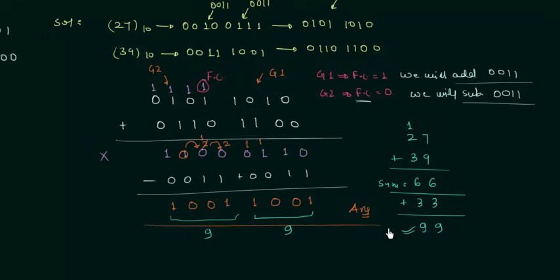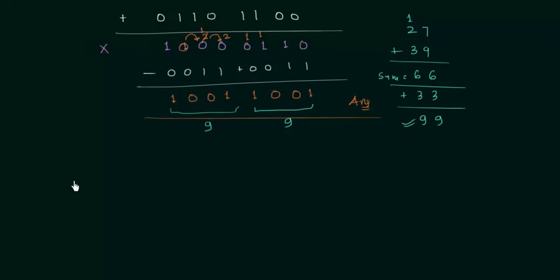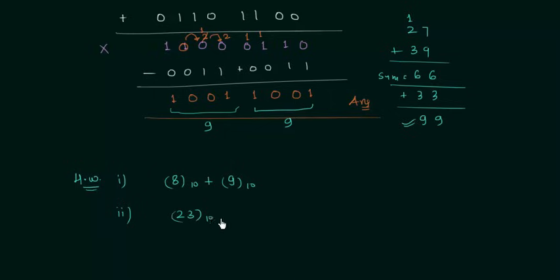So this is all you have to do in XS3 code addition. Now we will move to the homework problems. In the first homework problem, perform the addition 8 plus 9. In the second homework problem, perform the addition 23 plus 33. In the third homework problem, perform the addition 3 plus 11. Once you have your answers, post them in the comment section.